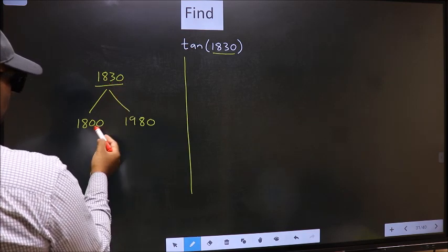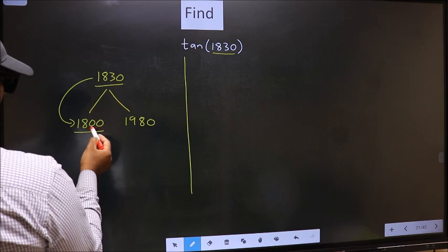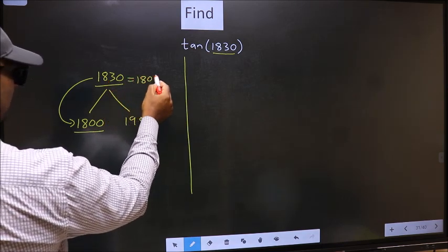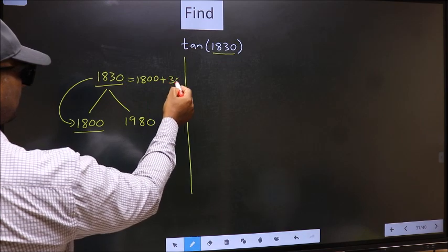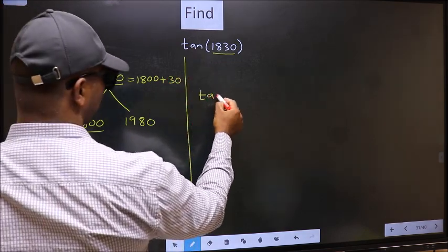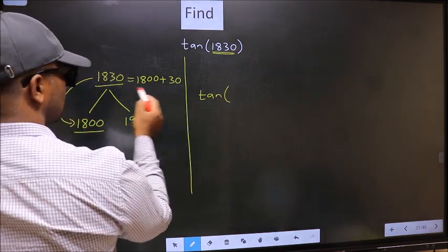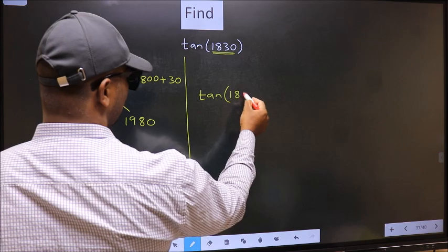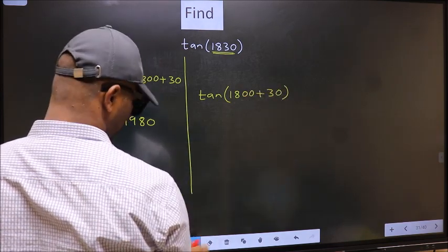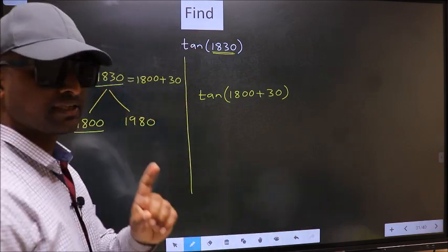Next, 1830 is close to which number? This is close to 1800. So in place of this, now we should write 1800 plus 30. So this will become tan 1800 plus 30. This is your step 1.